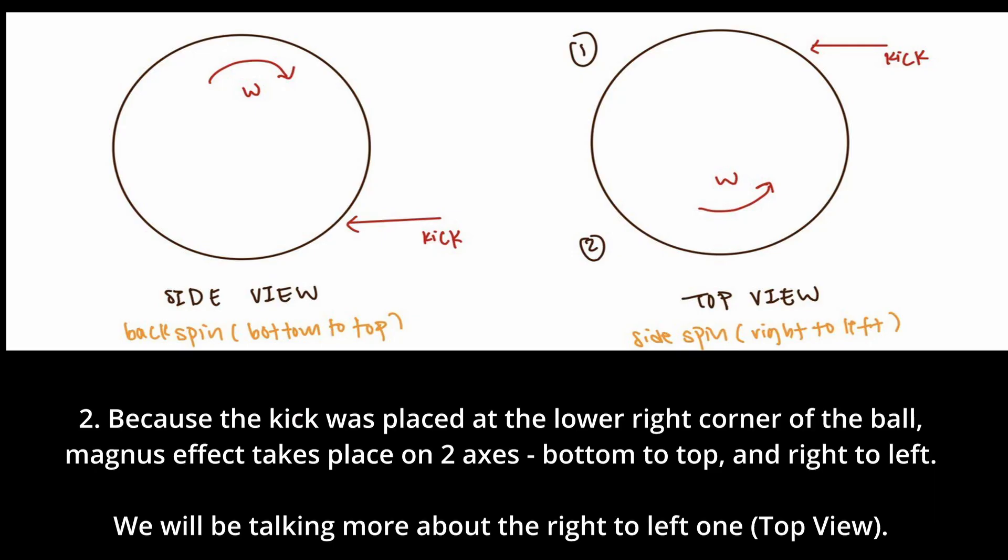Next, a mysterious scientist will explain the concept in more detail. Because the kick was placed at the lower right corner of the ball, Magnus effect takes place on two axes: bottom to top and right to left. We will be talking more about the right to left one with the top view.